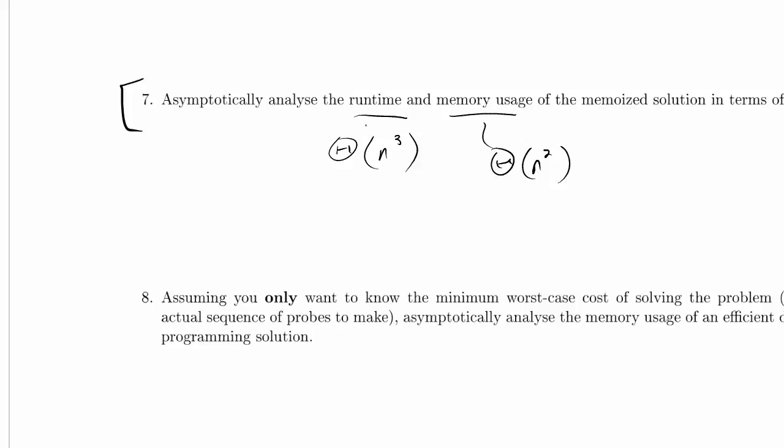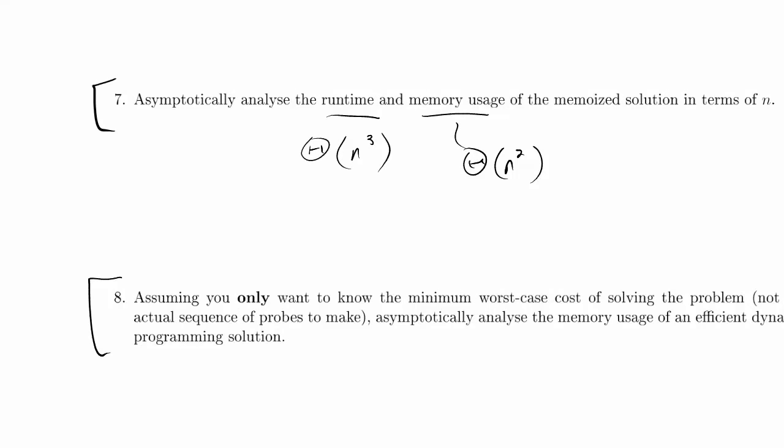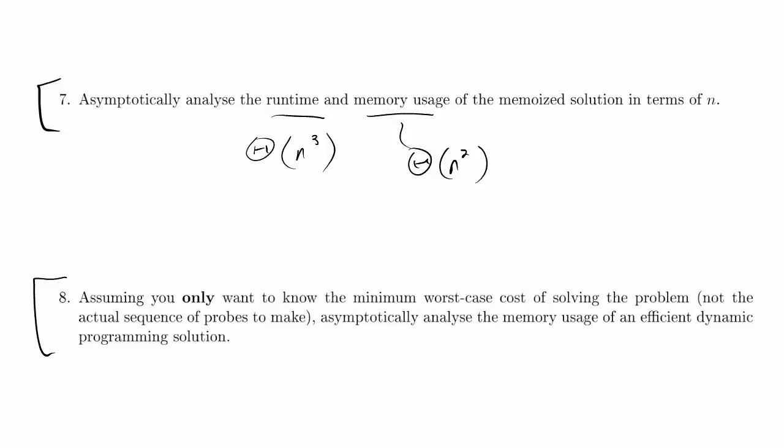Now, a lot of what I said applied to our dynamic programming approach as well. So, I am going to go ahead and talk about 4.8 briefly here. In 4.8, it says, let me get the whole problem on the page here. It says, assuming you only want to know the minimum worst case cost of solving the problem, not the actual sequence of probes to make. Asymptotically analyze the memory usage of an efficient dynamic programming solution. The really key word here is this one: Efficient.